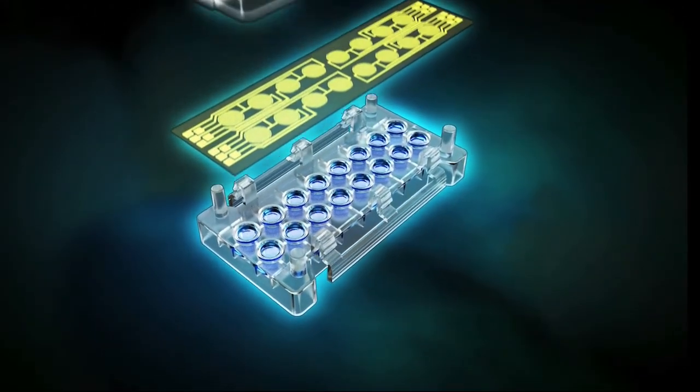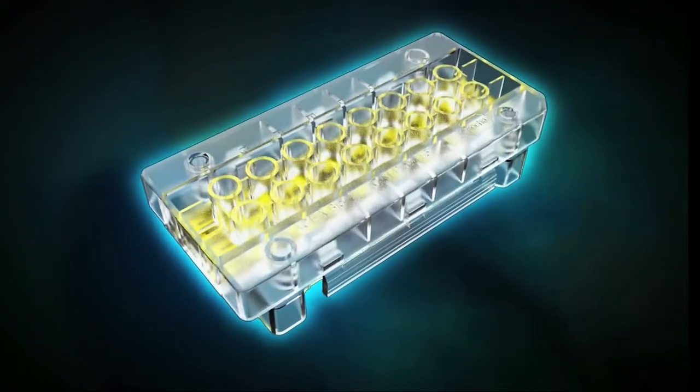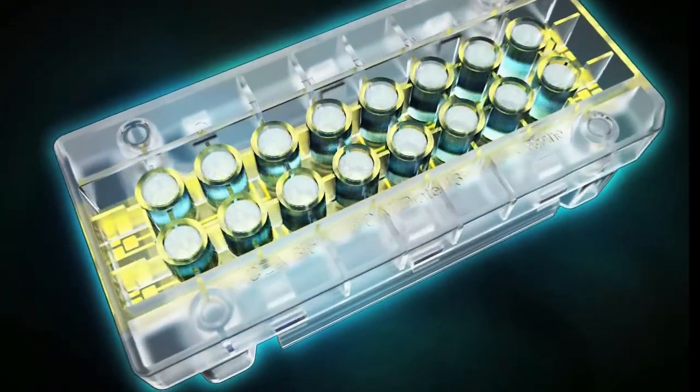Chemoattractant is placed in the bottom chamber wells, while in the top chamber, study cells are seeded onto extracellular matrix, or ECM, gel.